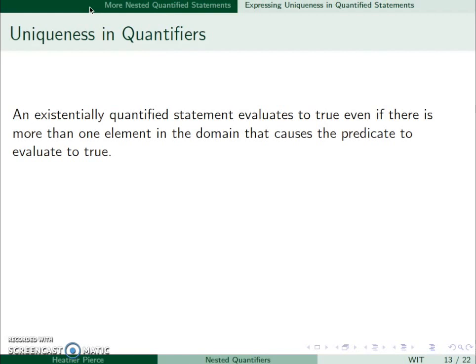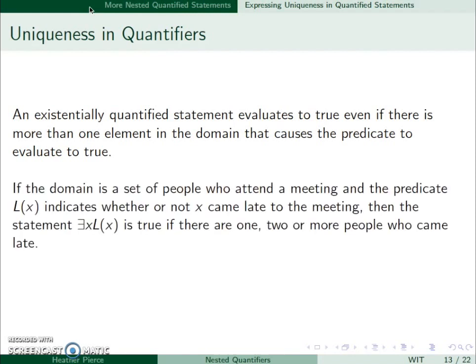We can also express uniqueness. So existentially quantified statements are true whether there's one element, two elements, or as many as you want that causes it to be true. But let's consider the domain of a set of people who attend a meeting. The predicate L(x) indicates whether or not they came late. So ∃x L(x) is true if there's one person who is late, two people, or several people.